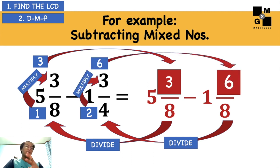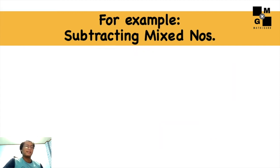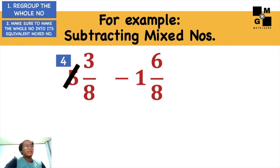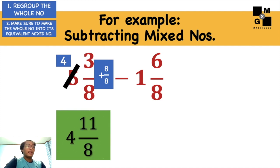As you can see, we still cannot subtract 3 and 6 because 3 is smaller than 6. How can we do this? Regroup the whole number again. 5 will become 4, and then the other one will become a fraction, and that is 8 over 8. So I can have here 4 and 11 over 8.